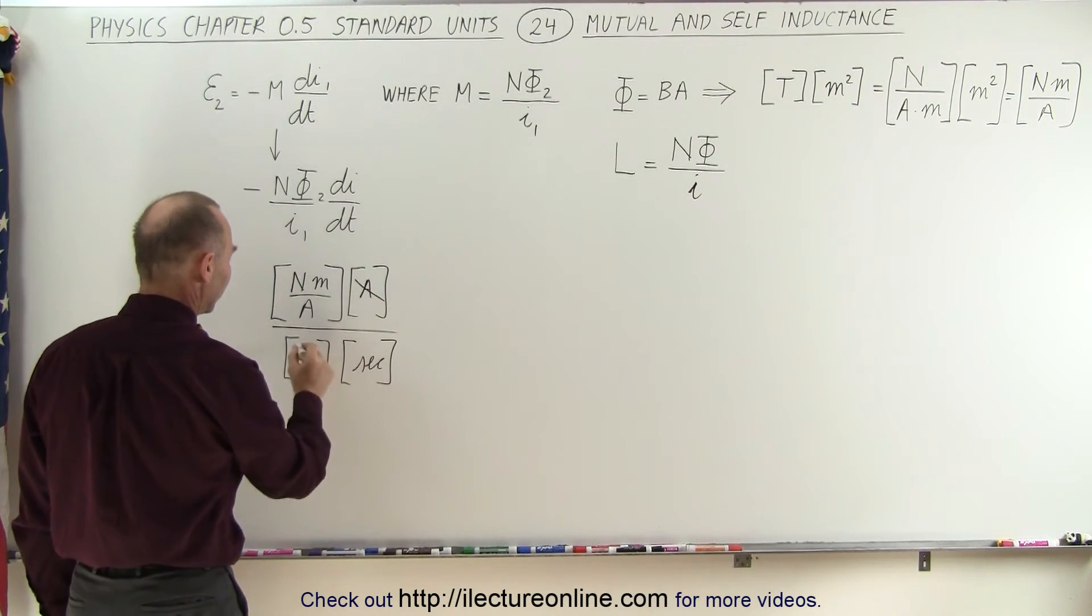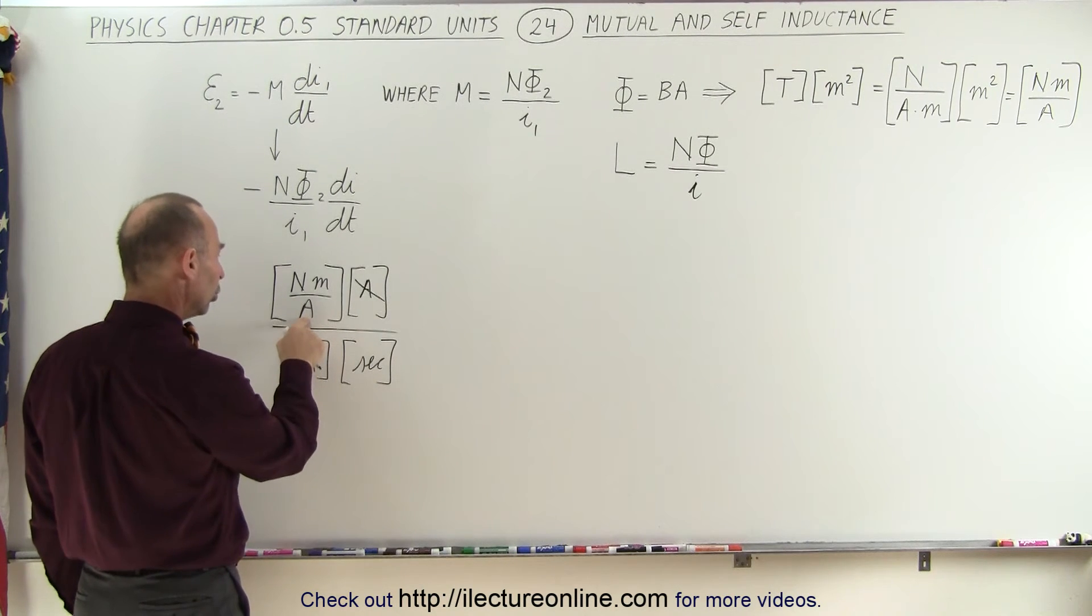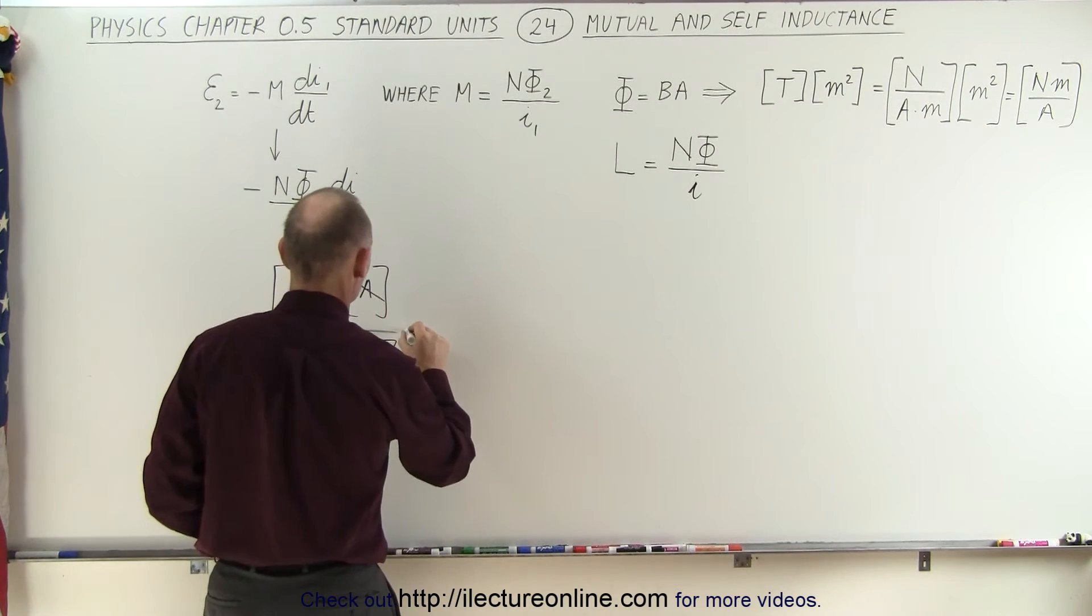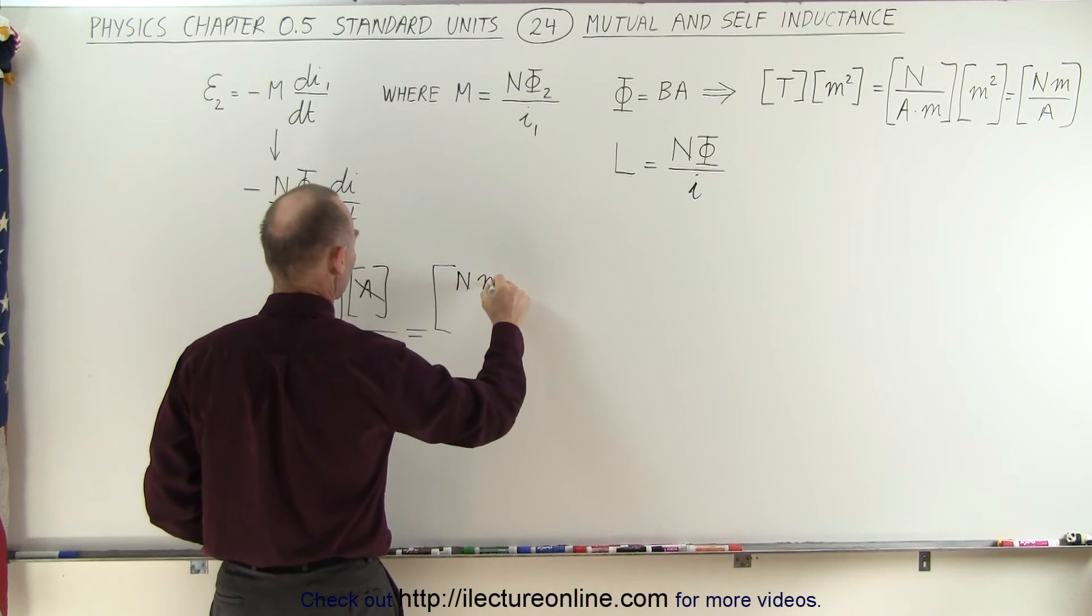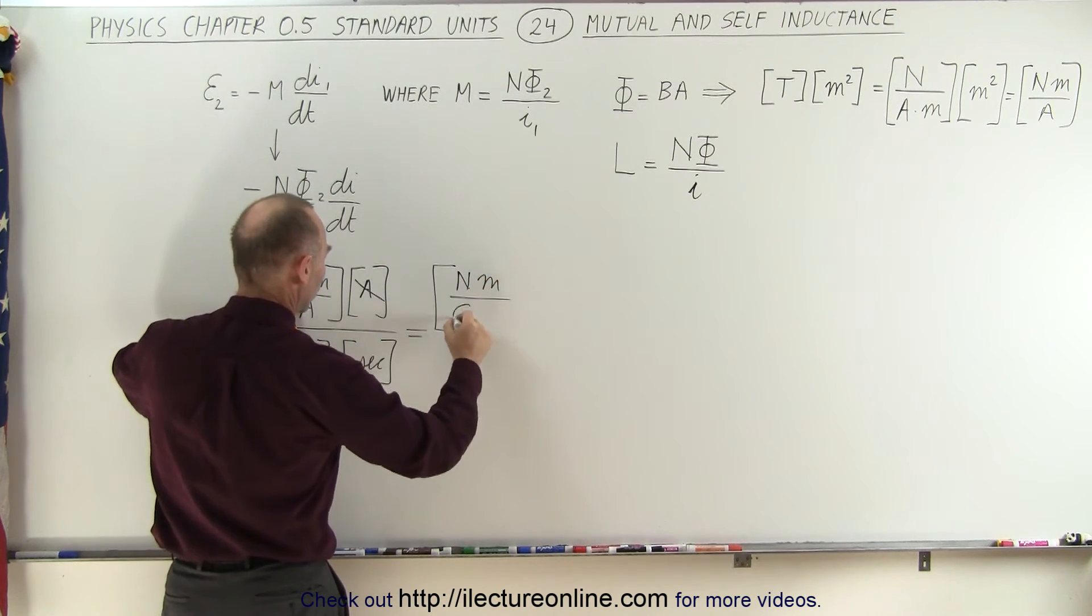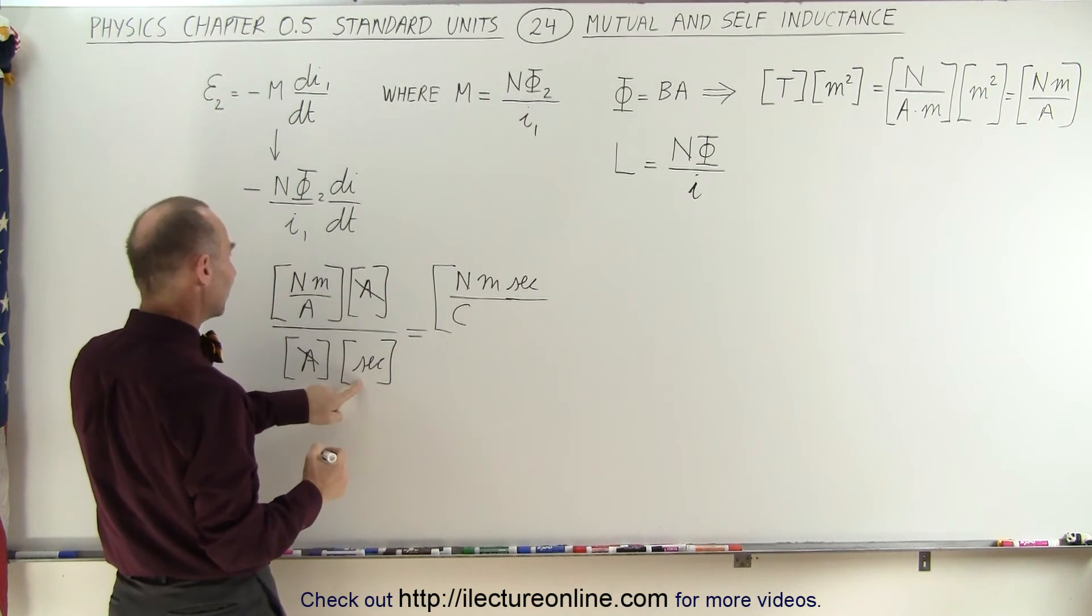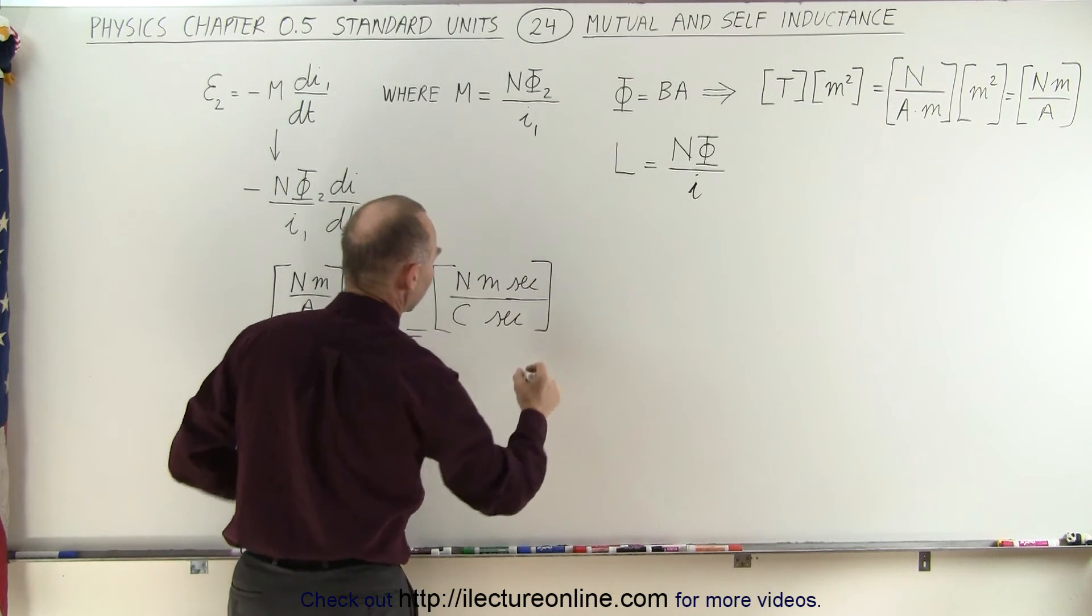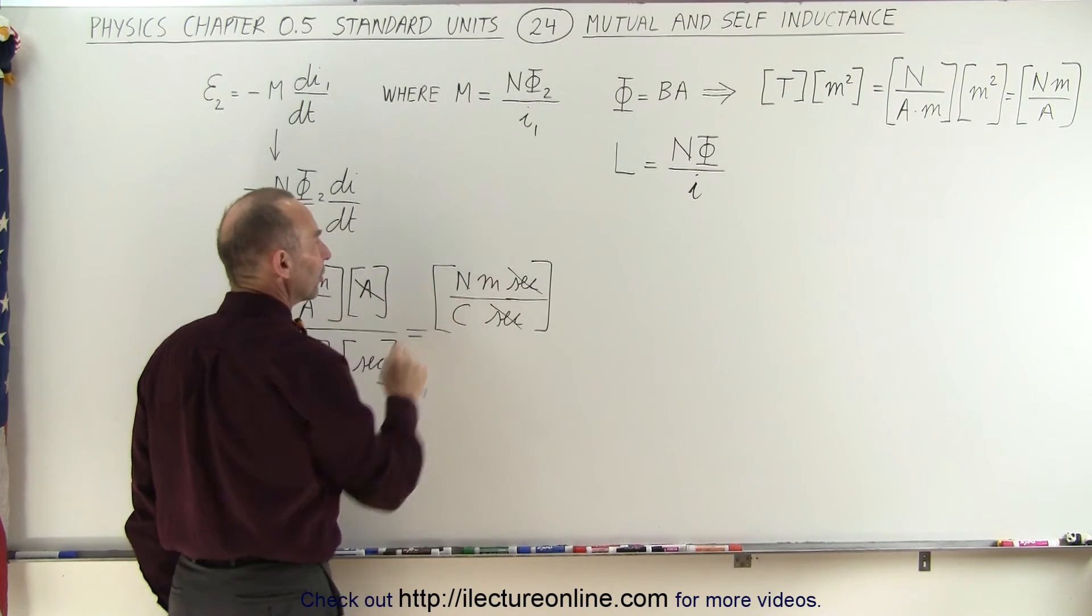Well, we can simplify this. And now if we write amp in terms of coulombs per second, that's current. Current is charge per time. So we can say that this is equal to newtons meters divided by coulombs per second, which means I need seconds in the numerator. And then I have seconds in the denominator here. Now you can tell that the seconds cancel out. Now we have newtons per coulomb times meters.